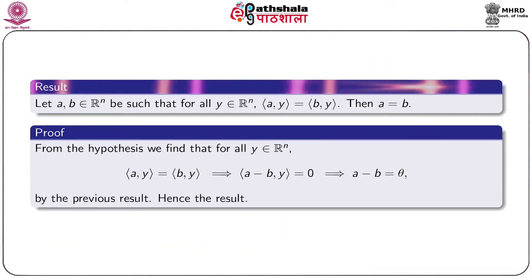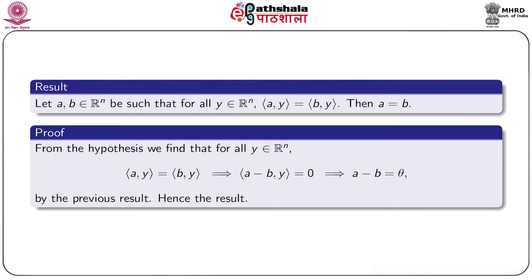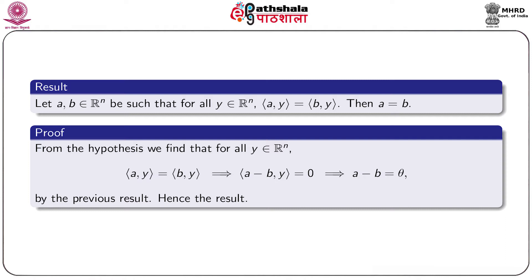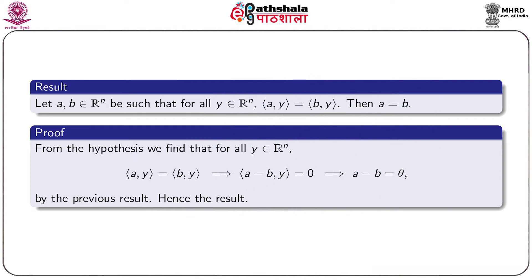Next result: let a and b be two vectors in Rⁿ such that for each y in Rⁿ, the inner product ⟨a, y⟩ equals the inner product ⟨b, y⟩. Then we must have a and b are identical. We have for each y in Rⁿ, ⟨a, y⟩ = ⟨b, y⟩. Using the additivity property of inner product, we can write this as ⟨a − b, y⟩ = 0. Now using the previous result, we have a − b must equal the zero vector, that is a = b.